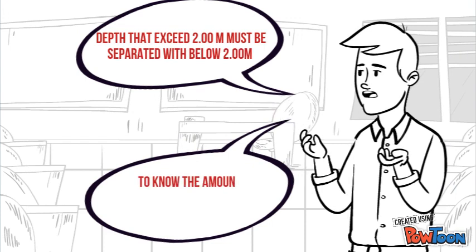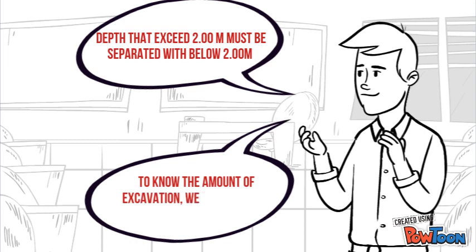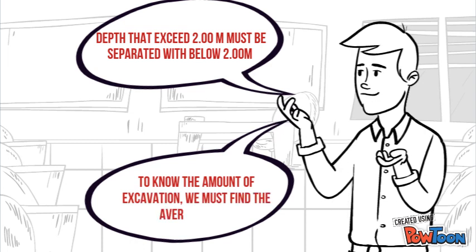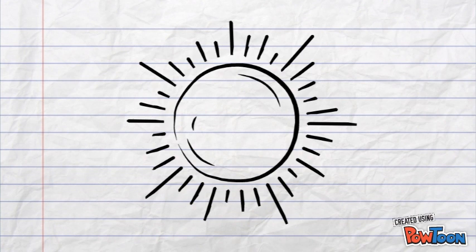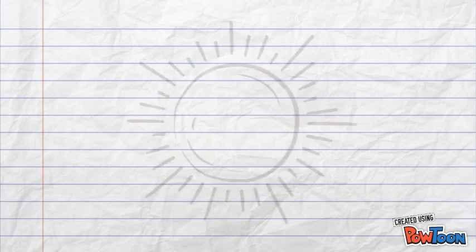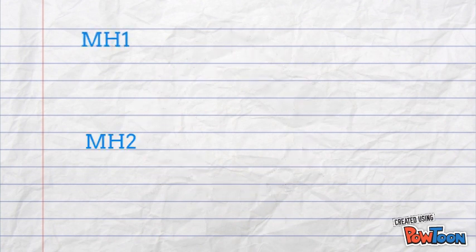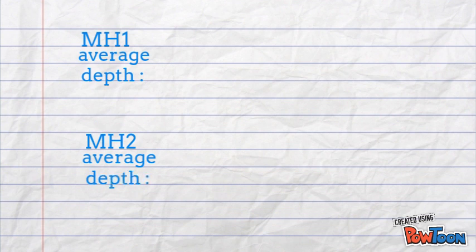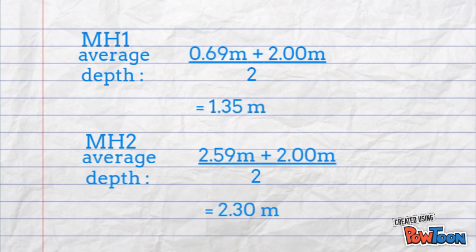To know the amount of excavation, we need to find the average depth. To get average depth, sum the formation level with 2 meters, then divide by 2. Now you get average depth.